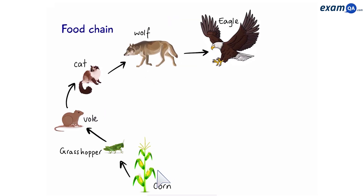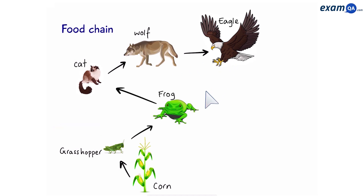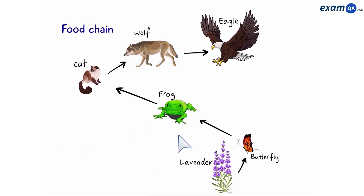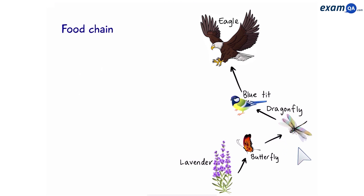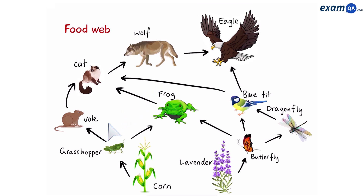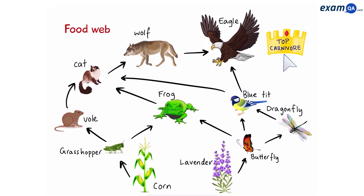Here's a food chain that you can find in a particular habitat. We can see that energy goes from the corn, to the grasshopper, to the vole, to the cat, then the wolf, and finally the eagle. Here are examples of other food chains in the same habitat. Now, these were all separate food chains; however, because they're all in the same habitat, we can join them together, creating a food web. In this particular food web, the eagle is known as the top carnivore, because nothing eats it.